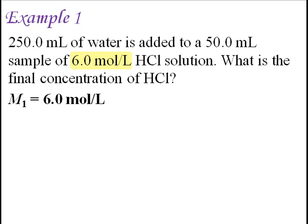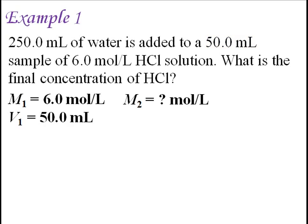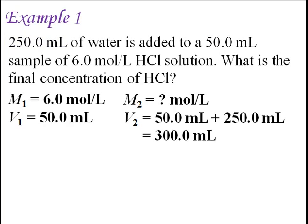M1 is the concentration of the original sample before dilution, which in this case is 6 moles per liter. V1 is the volume of the original sample, which is 50 milliliters. M2 is the final concentration of the diluted solution — this is our unknown. V2 is the total volume of the diluted solution, which is 50 mL of the original sample plus 250 mL of water added, coming to a total of 300 milliliters.